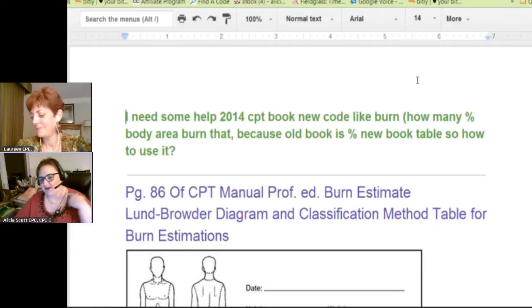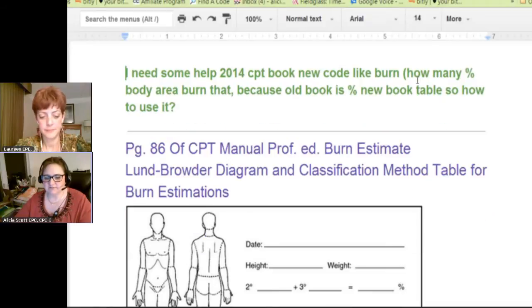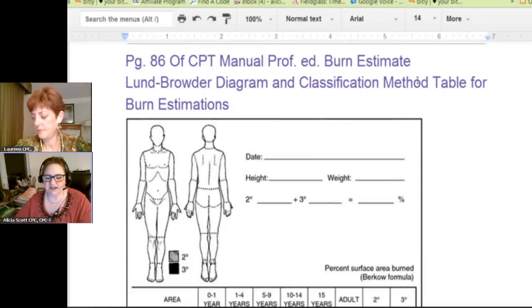Actually, I've got the manual, the CPT 2014 professional manual and it's on page 86. You can either turn to that and see what the new grid looks like. This is the closest one I could find off the internet. This is called a Lund Browder diagram.